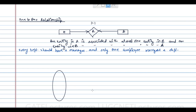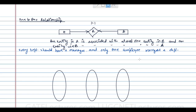We can represent this with two sets. The first set is the employees (e1 through e7), the second represents the managers relationship, and the third represents the departments (d1 through d5).